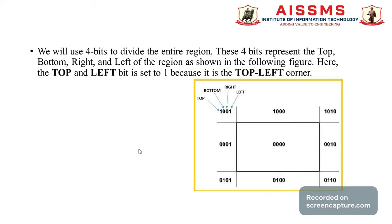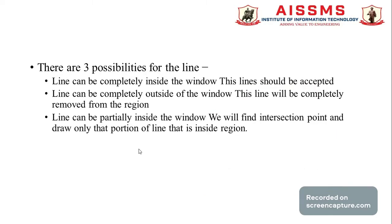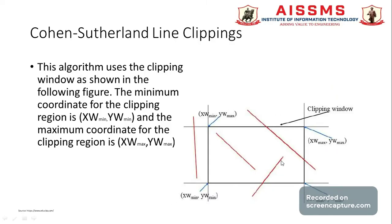In these nine regions, the 4-bit code for the entire region will be checked one by one. In this diagram, some lines are partially inside and partially outside the clipping window. We have to check the intersection points and find out which regions they relate to. If a line is completely inside the window, its 4-bit region code will be 0000.